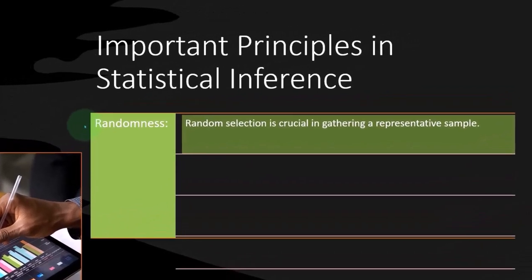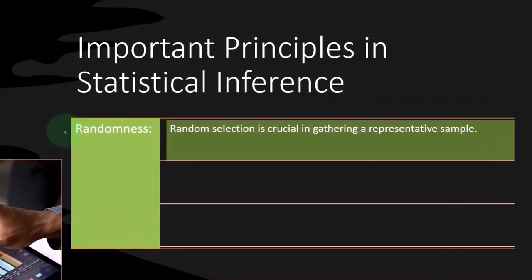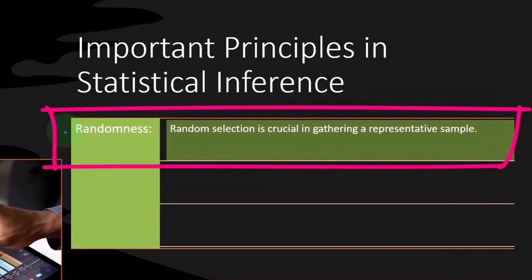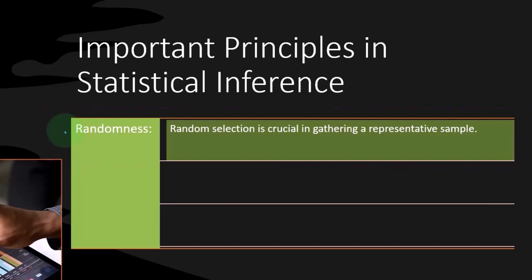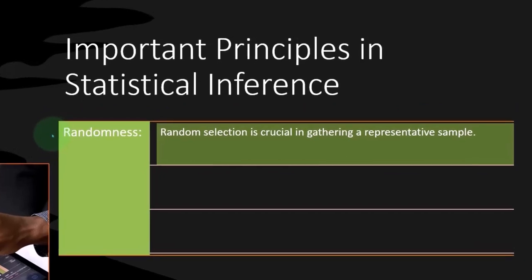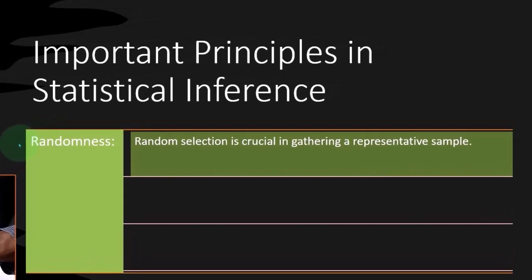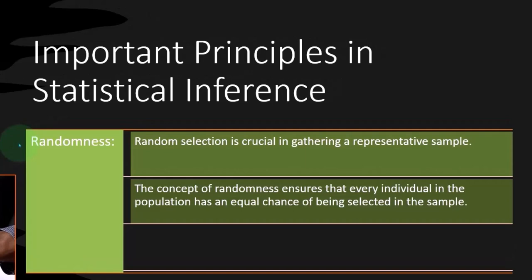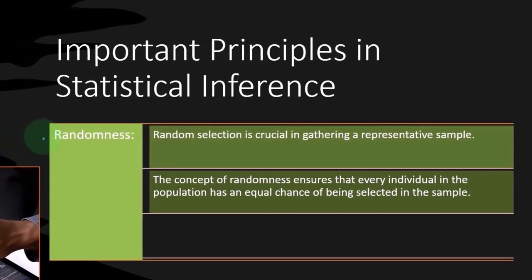This key concept is going to come up again and again. If we're trying to take a sample that tells us something about the entire population, we generally have to use randomness in some way, shape, or form to pick the sample. That can be more nuanced, and we'll talk about that more in the future, but that's the key concept.